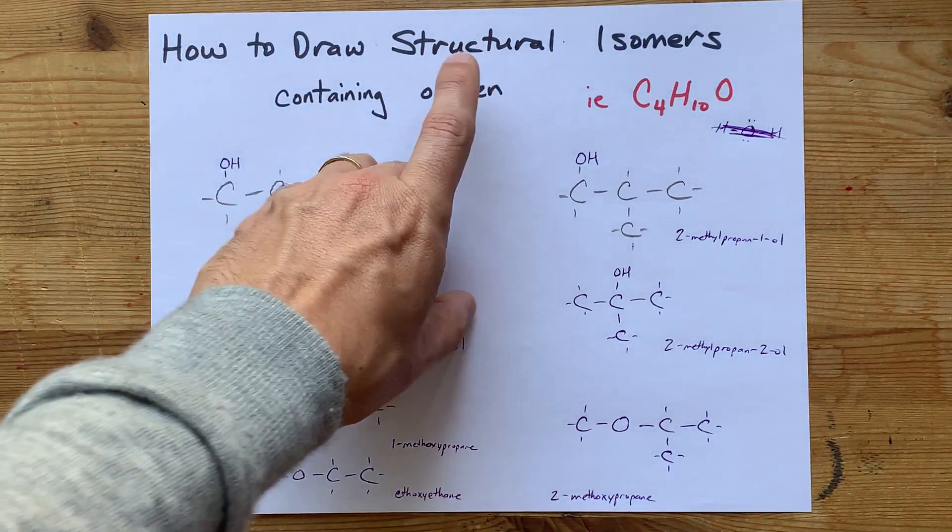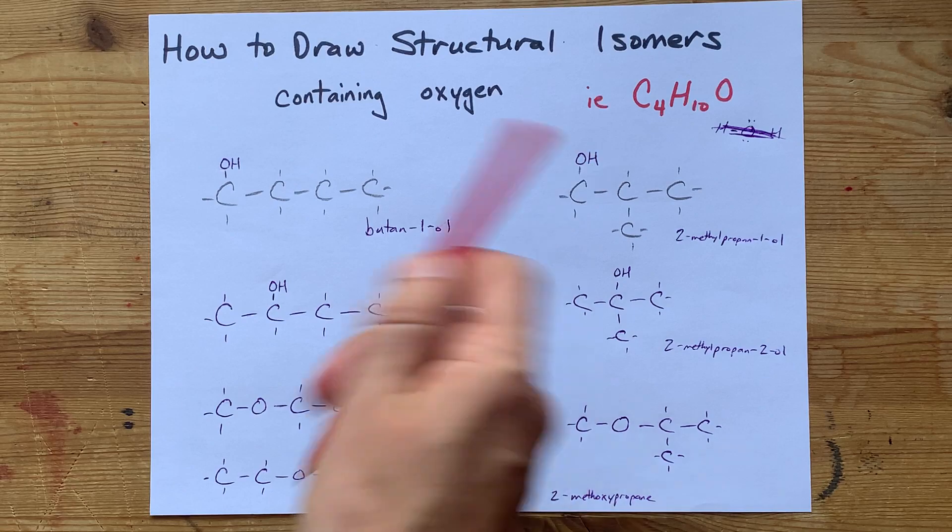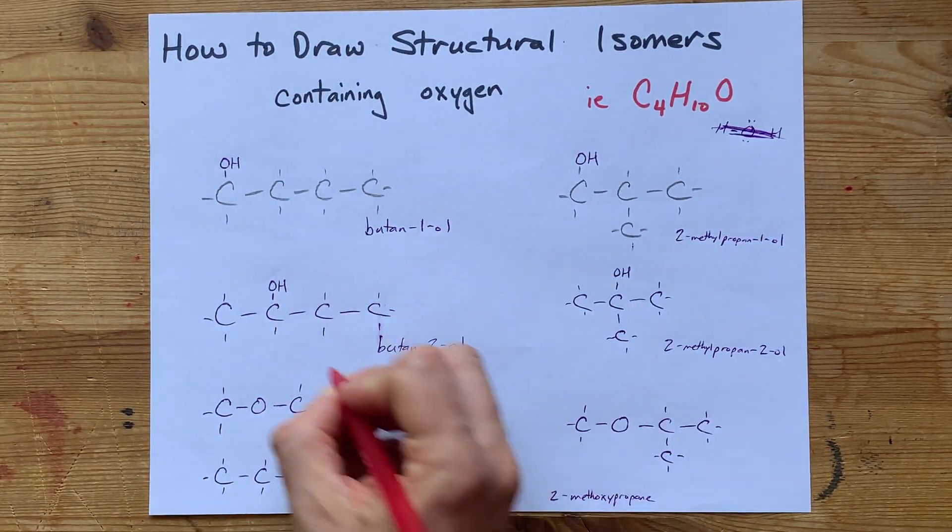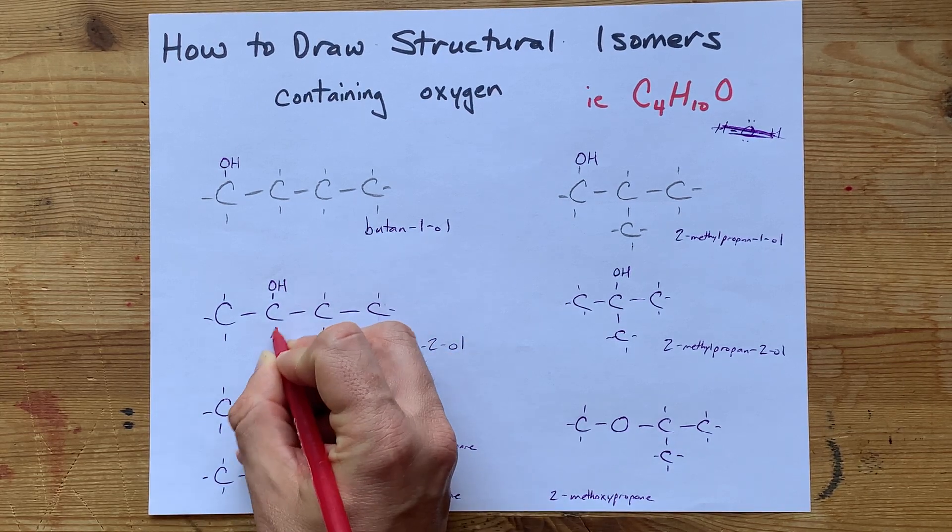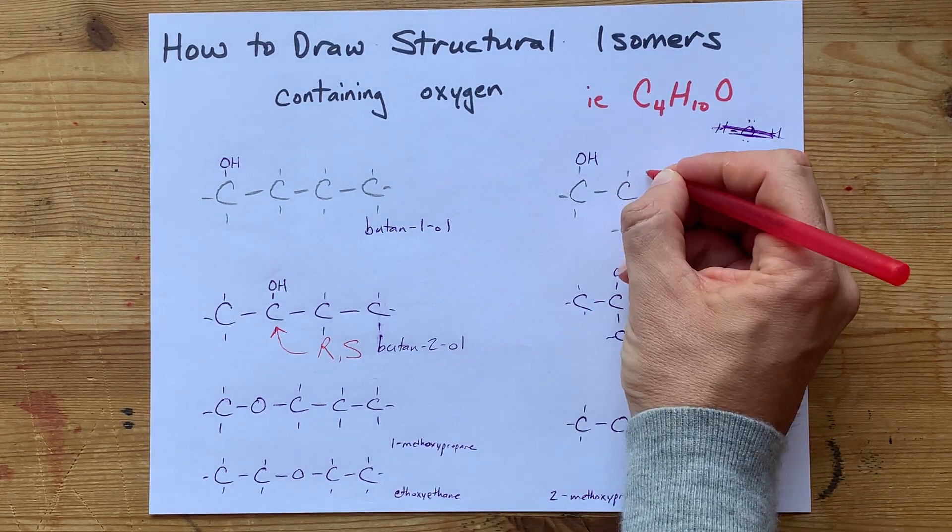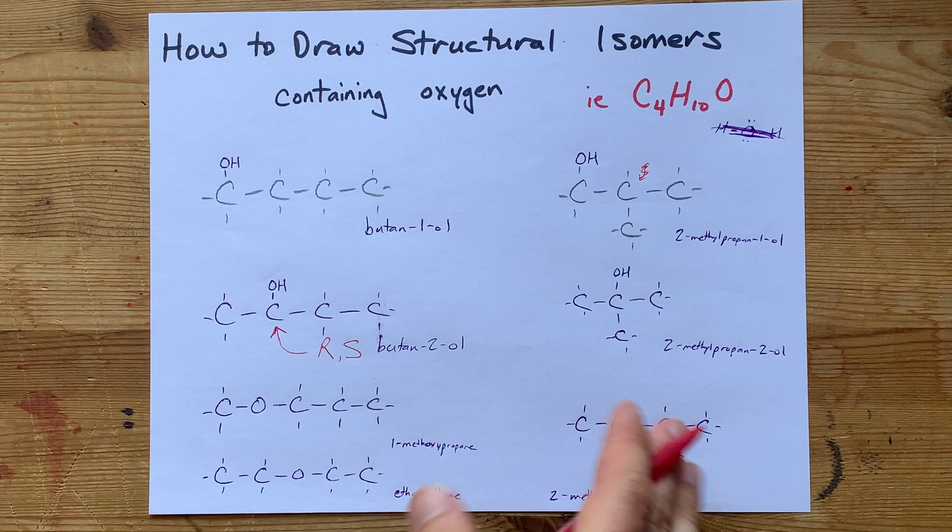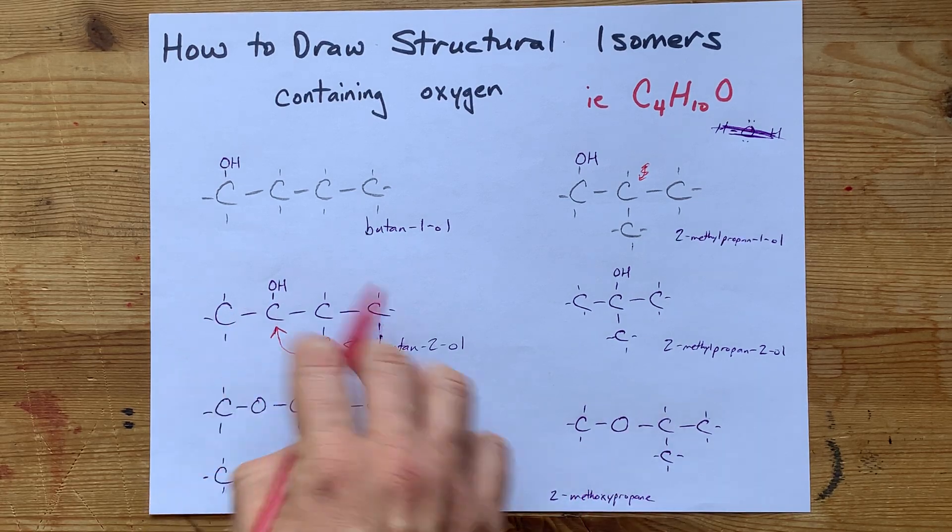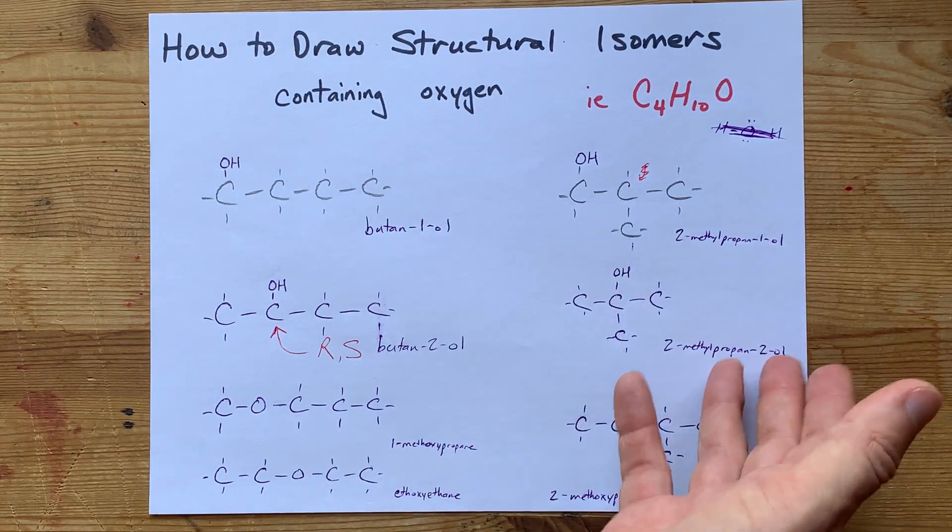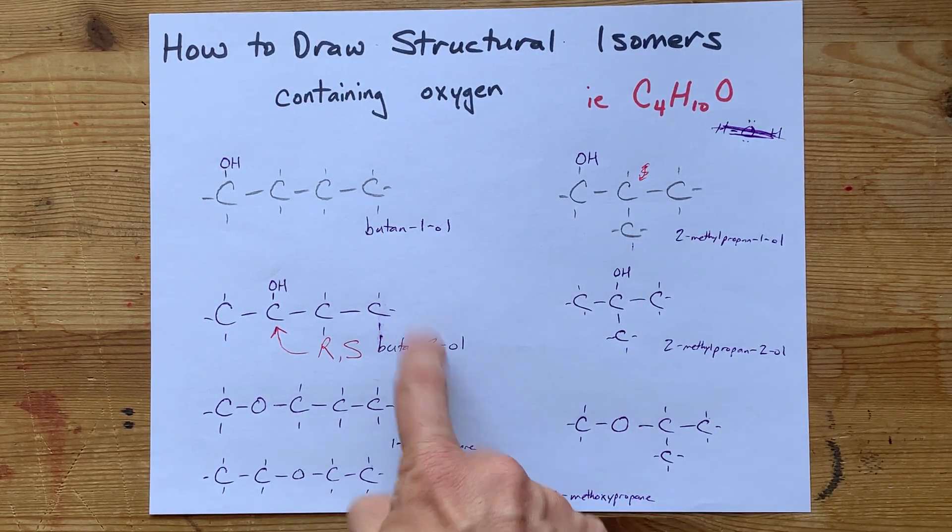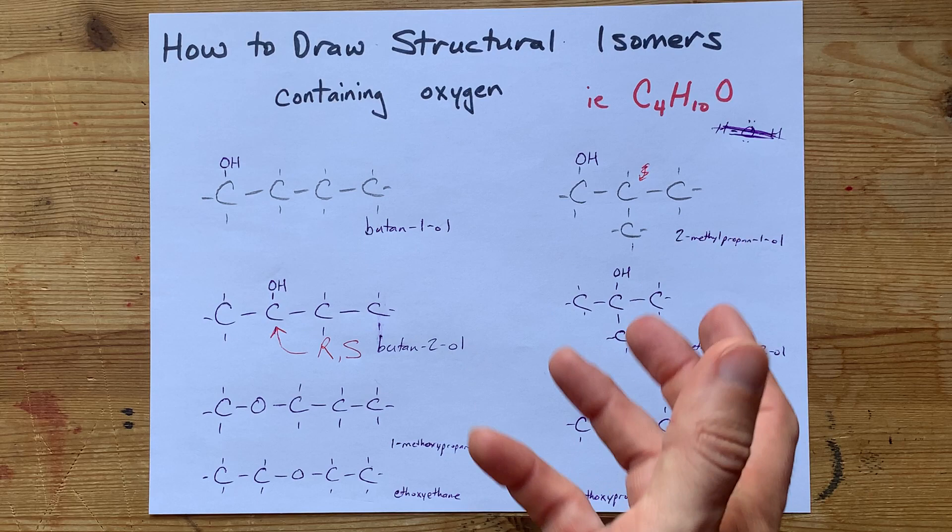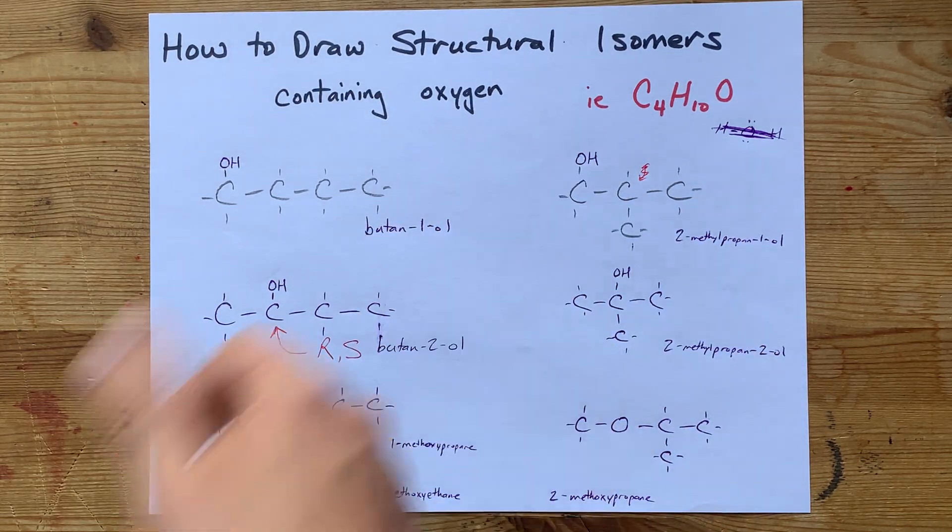One last thing. You were asked in this question for structural isomers, but if you know anything about chirality, some of these have R and S enantiomers. Here, there is a chiral center, so that one could be R and S. I think only one of these has any enantiomers. But again, if your teacher's saying that there are eight isomers, they're probably treating the R and S versions of butan-2-ol differently. If you didn't get that, don't worry. Thanks for being with me, and best of luck.